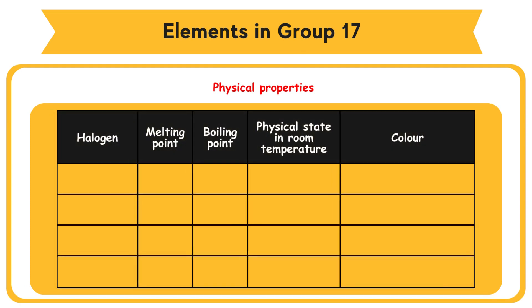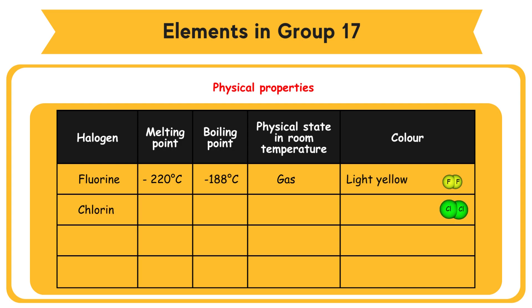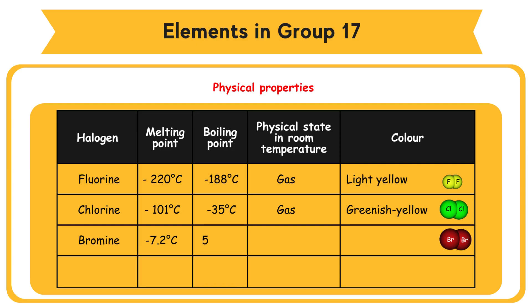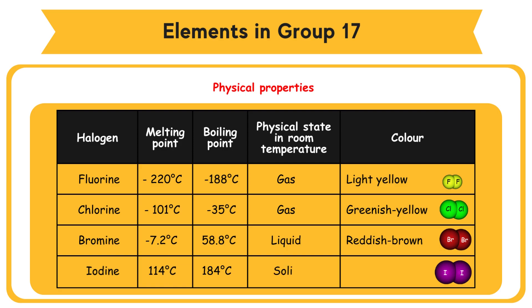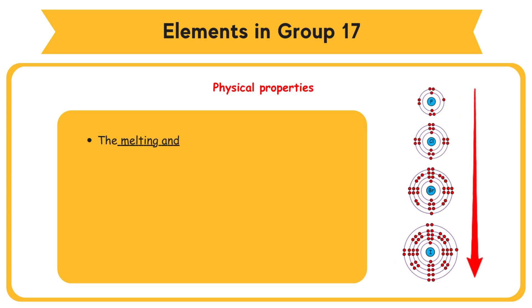When going down Group 17, the melting and boiling points increase. Fluorine: melting point -220°C, boiling point -188°C, light yellow. Chlorine: melting point -101°C, boiling point -35°C, greenish yellow gas. Bromine: melting point -7.2°C, boiling point 58.8°C, reddish brown liquid. Iodine: melting point 114°C, boiling point 184°C, purplish black solid. The melting and boiling points increase going down the group.